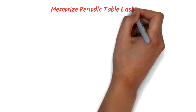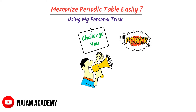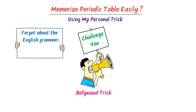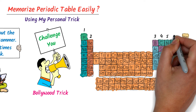How to memorize the periodic table easily using my personal trick of Bollywood pictures. I challenge you that you will not find this trick anywhere because it is my personal trick which I called the Bollywood trick. Before teaching you the trick, remember that you have to forget about English grammar. If you want to learn the periodic table for lifetime, then watch this lecture two or three times a day for a week. We will learn about eight main groups and then at the last, we will learn about transition elements.